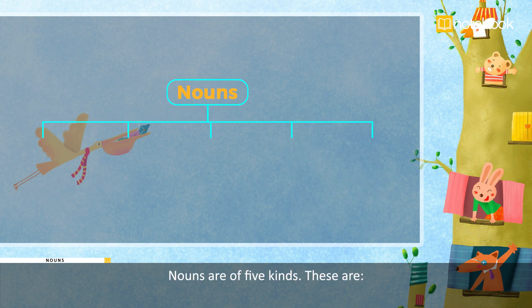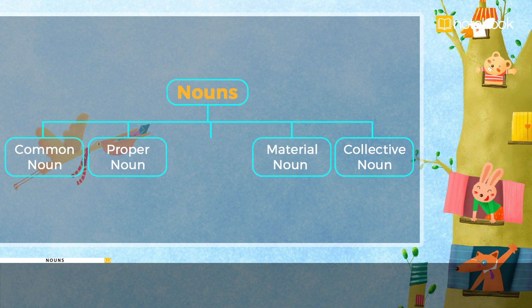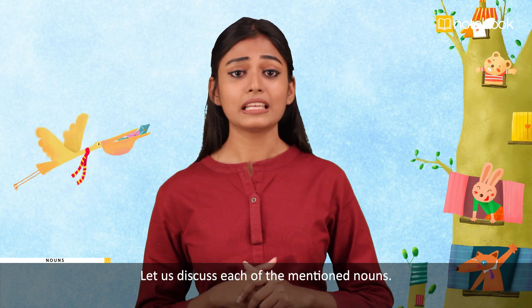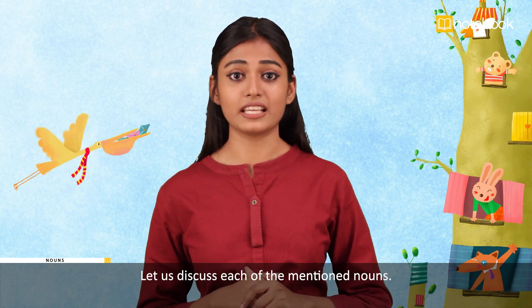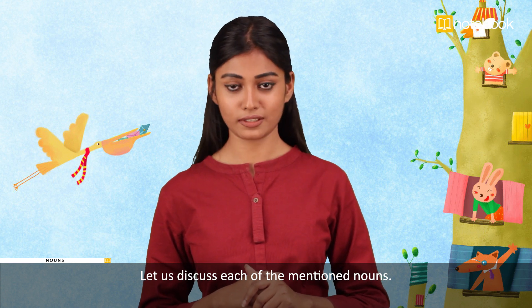Nouns are of five kinds. These are: proper noun, common noun, collective noun, material noun, and abstract noun. Let us discuss each of the mentioned nouns.